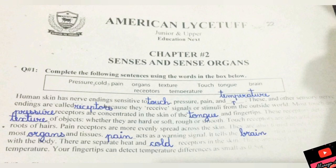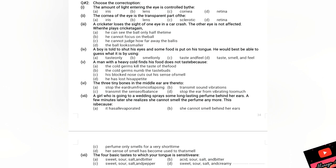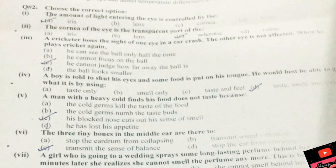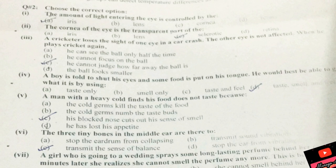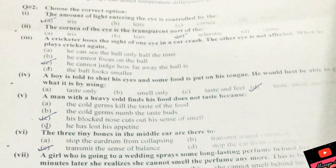The worksheet MCQs are solved here. Question number 1: the amount of light entering the eye is controlled by the iris. Question 2: the cornea of the eye is the transparent part of the sclerotic. Question 3: a cricketer who loses the sight of one eye — the correct answer is he cannot judge how far away the ball is. Question 4: a boy is told to shut his eyes and some food is given — the answer is he would taste and smell.